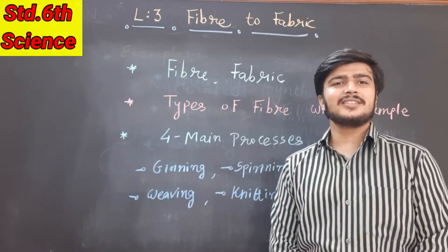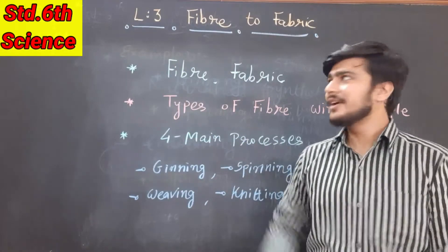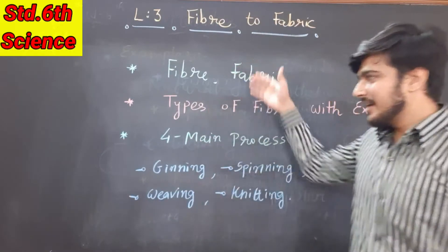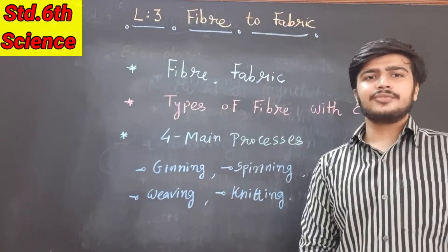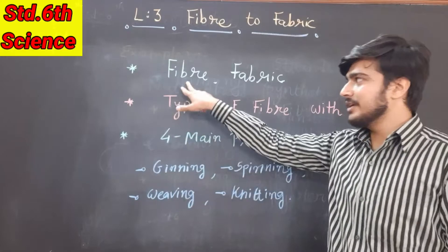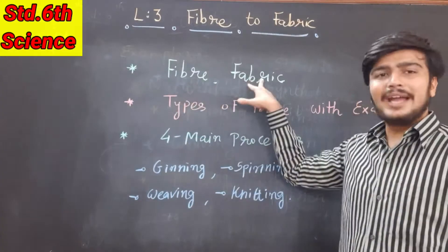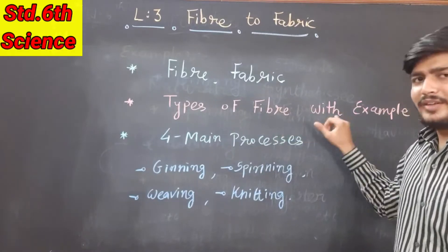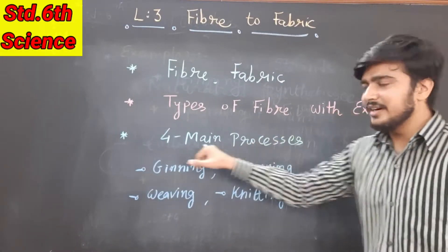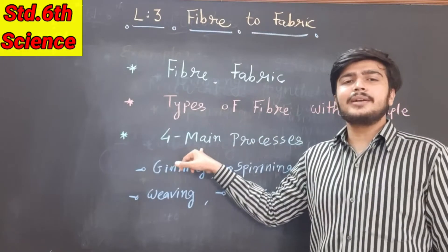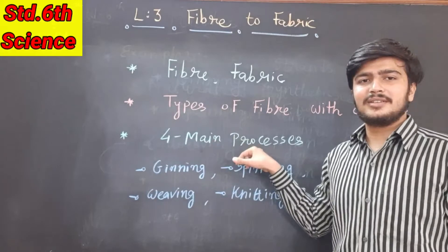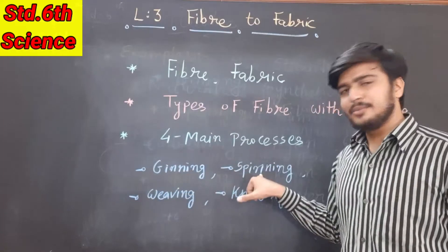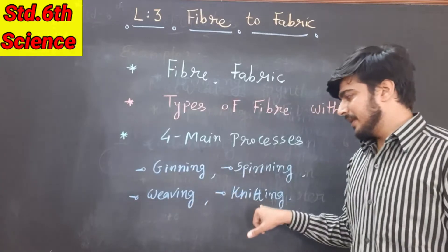Hello friends, this is the summary video of chapter number three: Fiber to Fabric. Here are some main points of lesson number three. First one: fibers and fabrics. Second one: types of fibers. Third one: the four main processes, which are the ginning process, spinning process, weaving process, and knitting process.